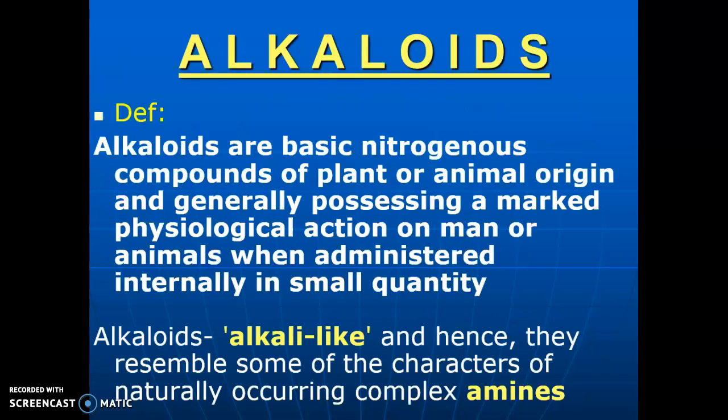What are alkaloids? The definition of alkaloids: Alkaloids are the basic nitrogenous compounds of plant or animal origin and generally possessing a marked physiological action on man or animals when they are administered internally. That is, alkaloids are the basic nitrogenous compounds obtained from plant as well as animal origin. Maximum amount of alkaloids are obtained from plants and they possess a marked physiological action on man or animals when given in very small amount.